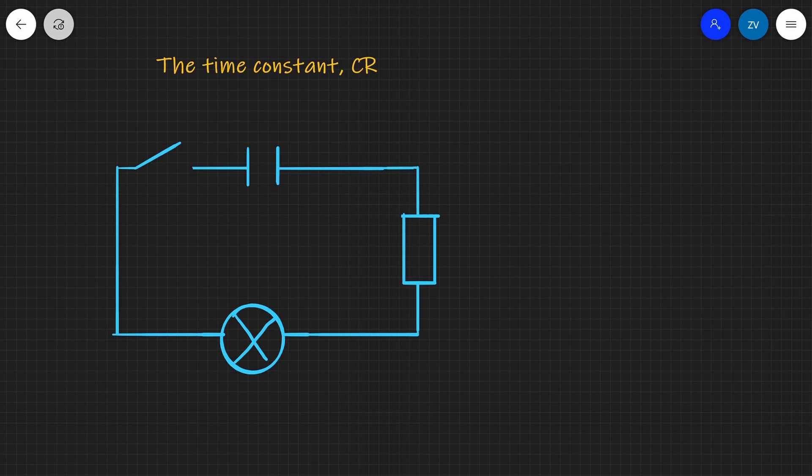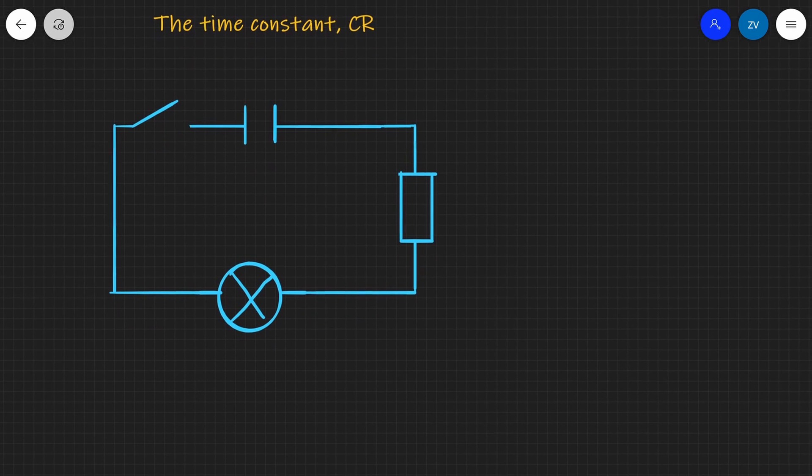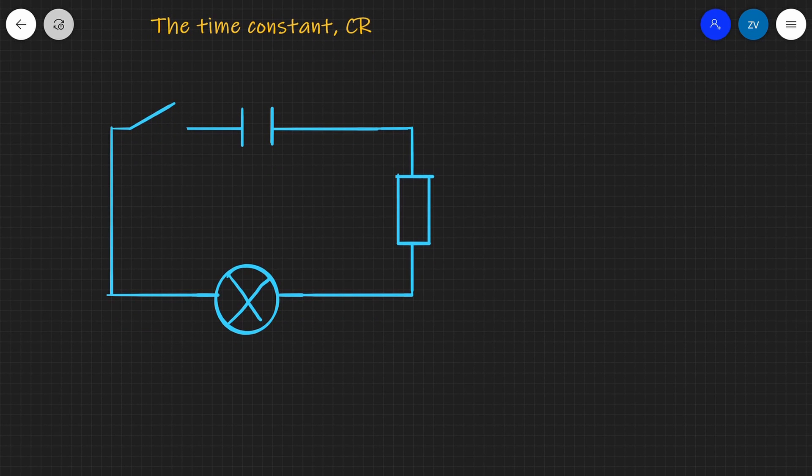Hello everyone, what we're going to be talking about today is the time constant. Now let's imagine the following circuit. We have a capacitor, we also have a switch, and this capacitor is connected in series with a resistor and a light bulb.